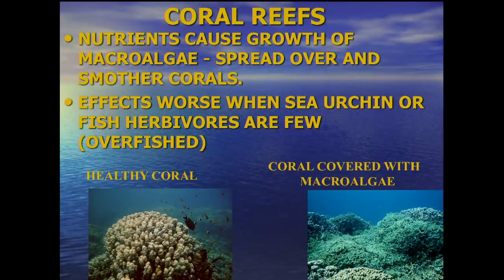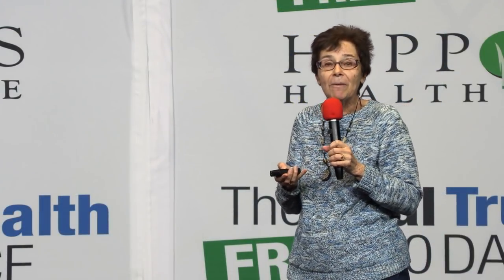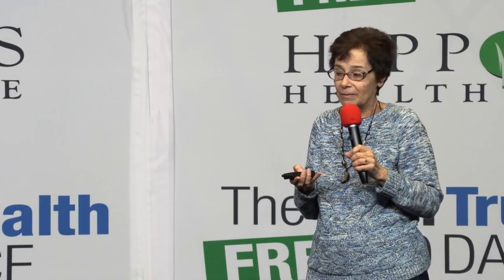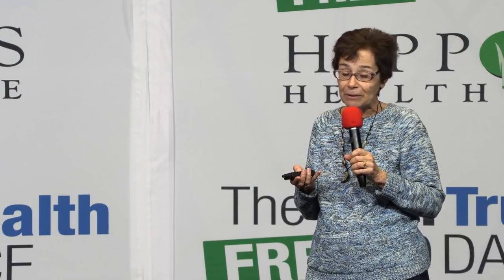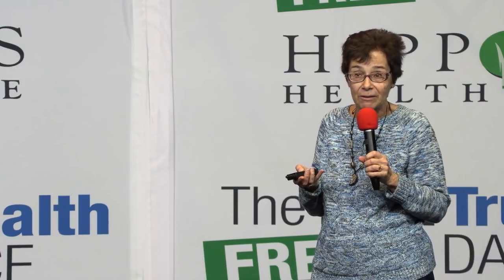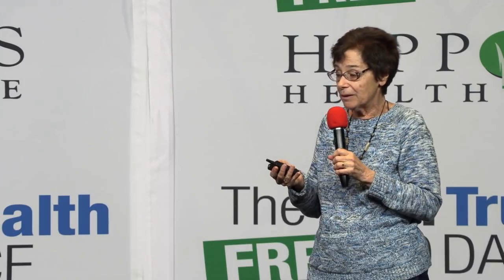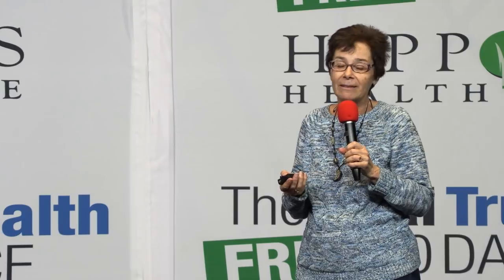Further south, we have coral reefs that are also in big trouble because of excess nutrients and eutrophication. The excess nutrients cause other kinds of algae to overgrow the corals and cover them. Here the coral is covered with algae because the algae was stimulated to grow by the nutrients coming in. If you have a lot of animals around that eat that algae — things like sea urchins, things like certain species of fish — they may be able to keep it under control. But if you've overfished and you don't have many of those fish around, then your coral reef is in bigger trouble from getting overgrown by algae.